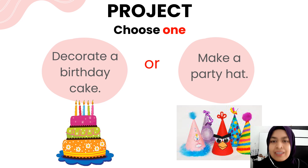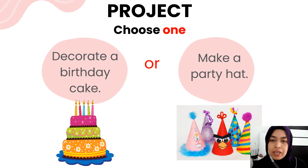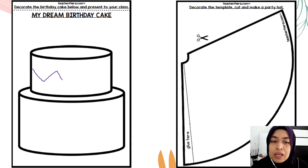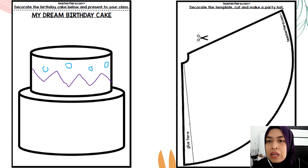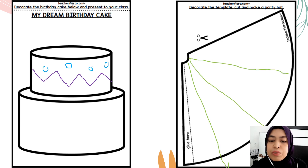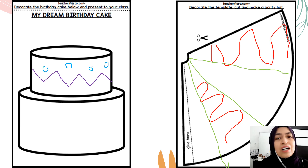Alright, here comes the fun part! For today's project, I want you to choose one. Would you like to decorate a birthday cake or make a party hat? Here are two templates. If you would like to decorate a birthday cake, you can draw it and fill it with colors you like. Or if you want to do the party hat, take a piece of paper, draw the template, cut it, and decorate it with your favorite colors or patterns — up to your creativity! Remember to take a picture of your project and send it to the classroom WhatsApp group.